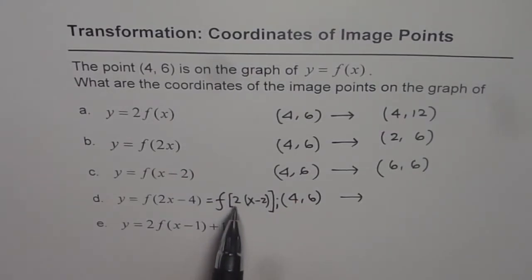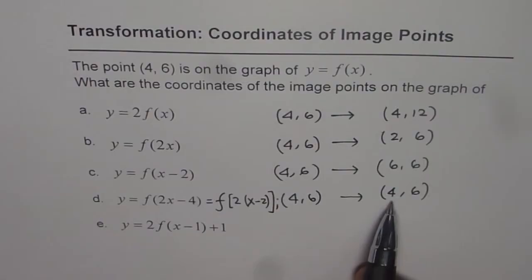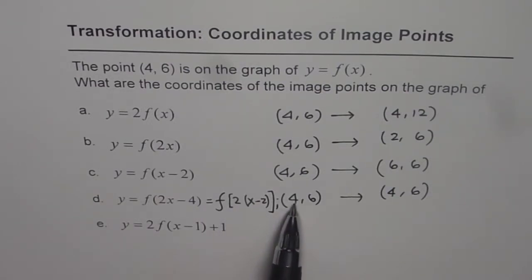Now it is horizontally compressed by a factor of half and then translated two units to the right. What we do here is first divide four by two. Four divided by two is two, and then you add two, so you get four back. This is the transformation: first, horizontal compression by a factor of half - half of four is two - and then you add two. When you add two to two, it becomes four. So this point is invariant; it's the same point, (4, 6).